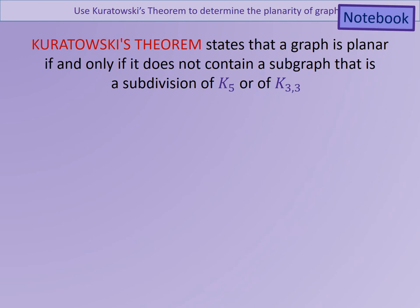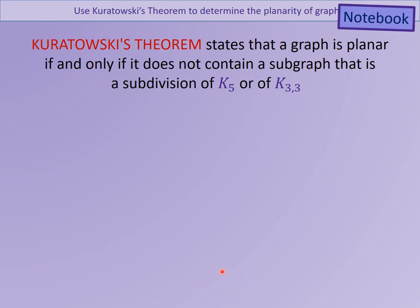Let's look at Kuratowski's theorem. Get your notebooks out. It states exactly what we've just been investigating: if you have a graph — and it doesn't have to be a complete graph, it can be any graph — and it contains either a k5 or a k_{3,3}, we know it's definitely non-planar. Kuratowski's theorem is the opposite as well: as long as a graph doesn't contain a k5 or a k_{3,3}, the graph is planar and can definitely be drawn without any edges crossing.